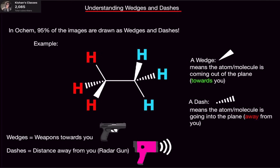Think about it like that. If the weapon-cop thing didn't work out for you, there's the sprint thing — the Olympic thing. But once again: wedges are weapons, and they come at you. Wedges come at you. Dashes go away from you. Dash away — distance, gain distance away from it. That's the end of the video. If you found this video helpful, please like and subscribe. Until next time, later.